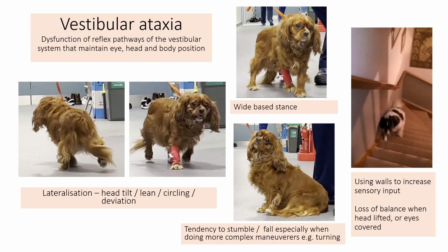You may need additional support when doing more complicated activities. This is an example of a dog with mild vestibular disease using stairs to increase sensory input of which way was up during more complex locomotion. When we circled this dog, she was less able to go to the left — the side she has the problem on — tending to fall and stumble, showing that lateralization and wide base stance.